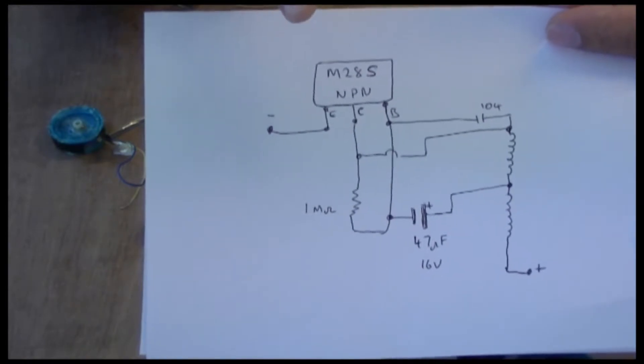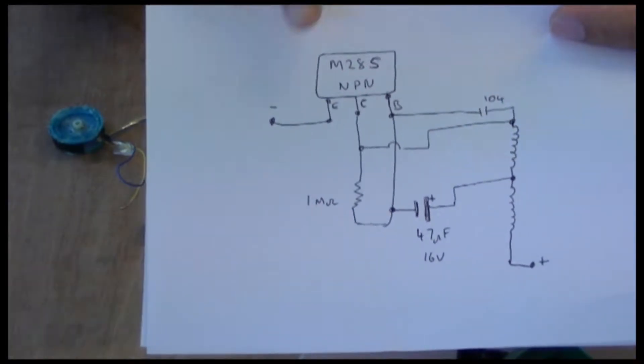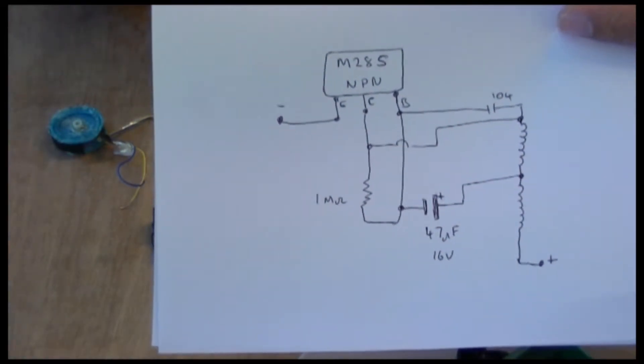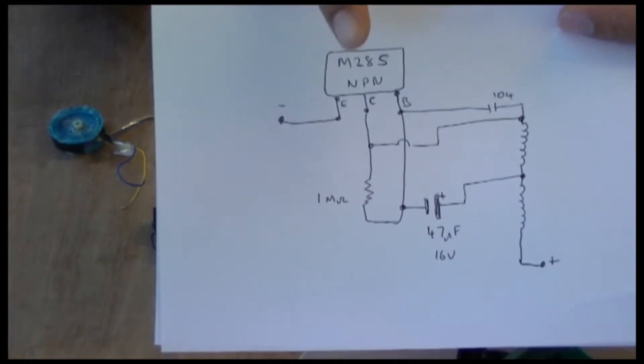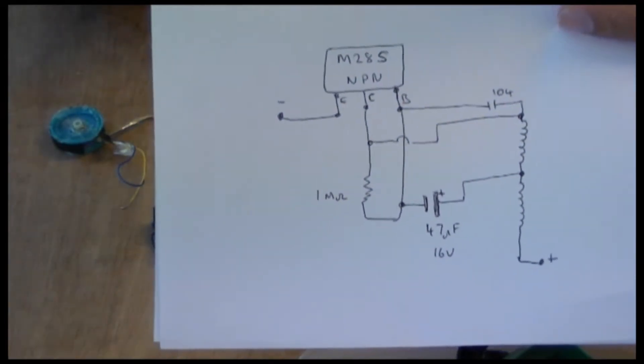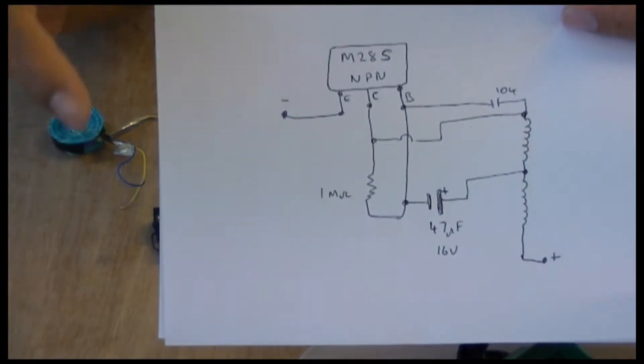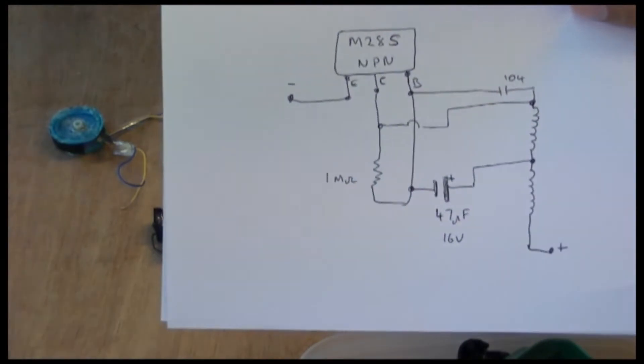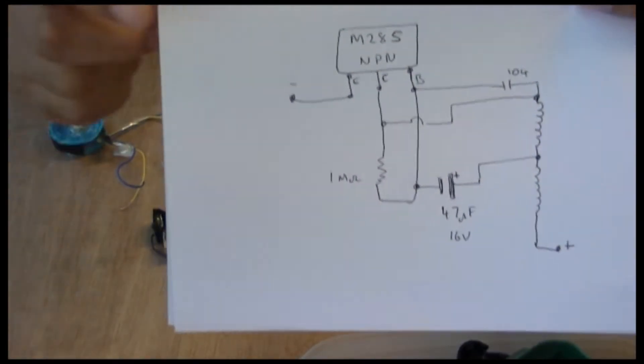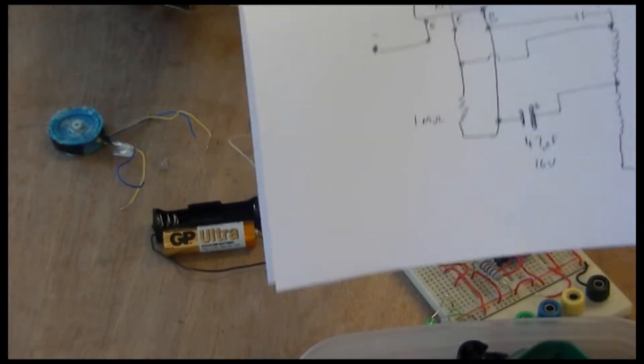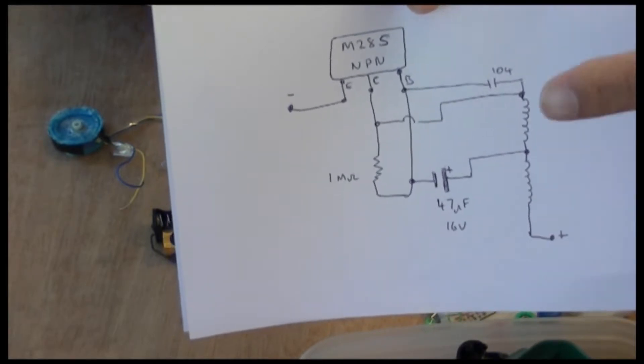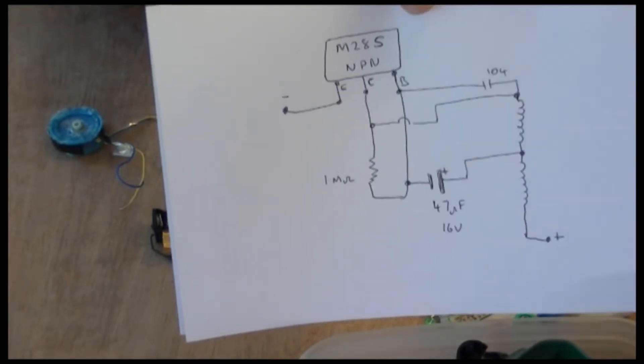That's an S by the way, NPN transistor. And as you can see, the base collector emitter configuration is a little bit different. And that's the capacitor they use, 47 microfarad 16 volt, one megaohm resistor which I haven't got but I've borrowed it from this thing, and one-oh-four there. And the coil, it's the coil circuit there with that center tap there.